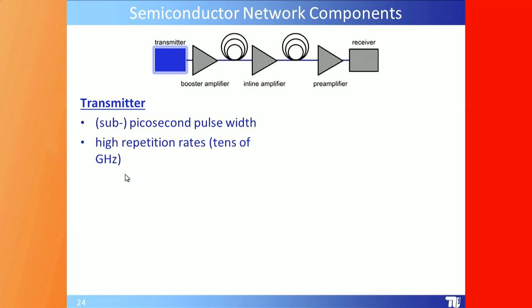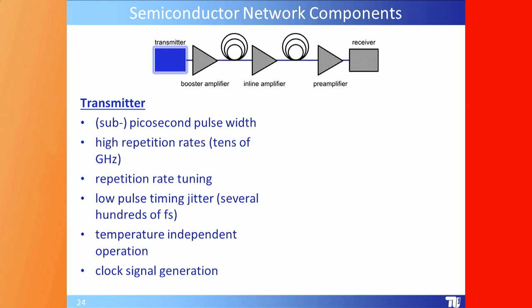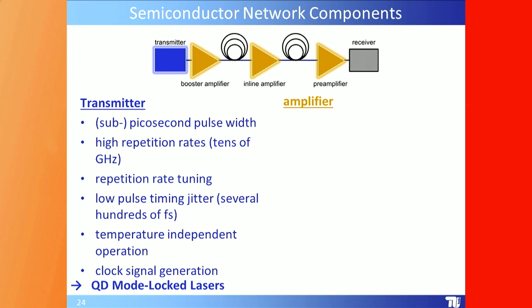The transmitter should have tens of gigahertz repetition rates with tuning capability, low pulse timing jitter — meaning each pulse arrives at the same time relative to the subsequent pulse — and temperature-independent operation, usable for clock signal generation. Quantum dot mode-locked lasers are probably the most preferable solution for being faster and more energy efficient. The same applies to amplifiers: small footprint, low cost at metro networks at 1.3 µm, easy to integrate, multi-channel amplification, and signal processing including wavelength conversion, switching, and regeneration.